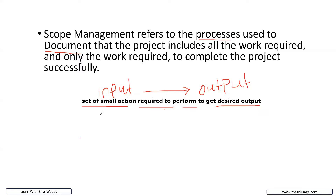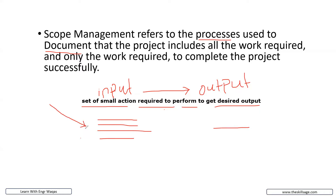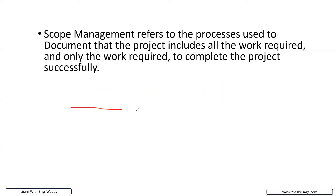To cook a chicken biryani, we need chicken, rice, masala, and every other thing required for cooking. At the end we get chicken biryani. But if we change the chicken and put mutton, then it's going to be mutton biryani. Simple. Same is happening with scope management — we need certain inputs and we are going to get certain outputs.